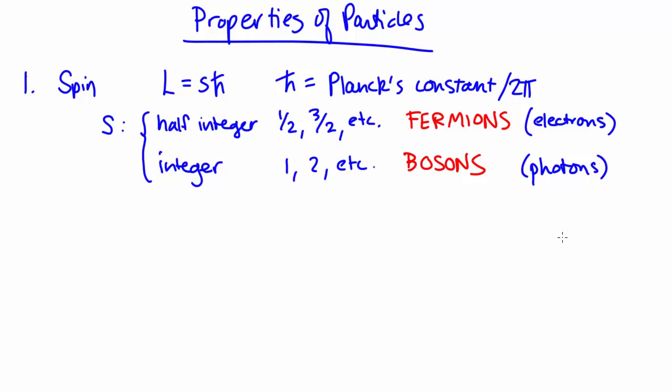We'll learn about lots of different types of fermions and bosons later on, but for now, we'll leave it there. Fermions are half integer spin.